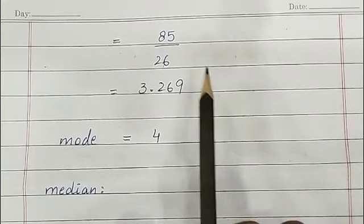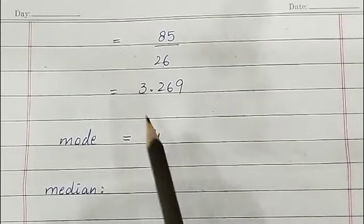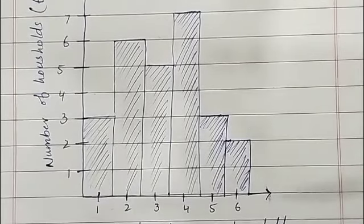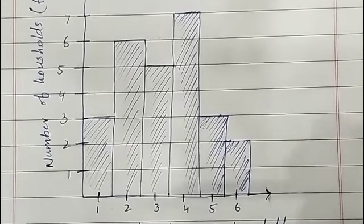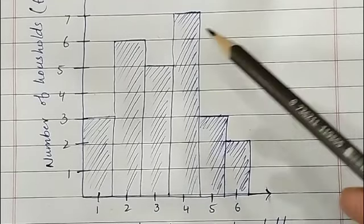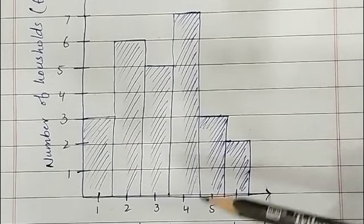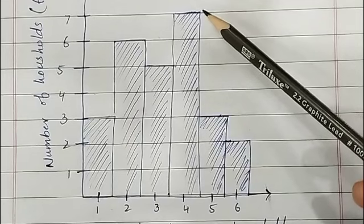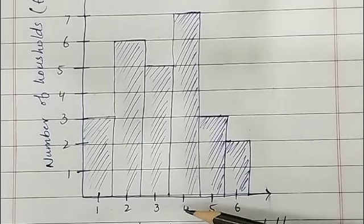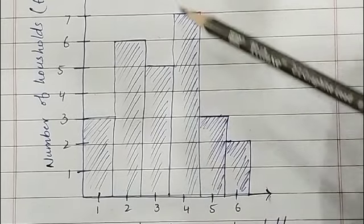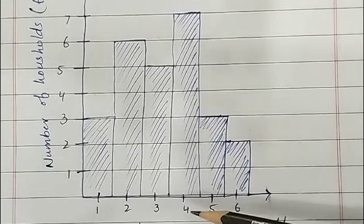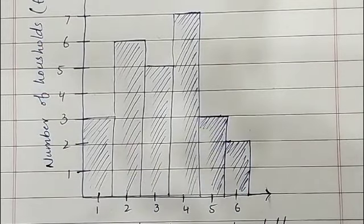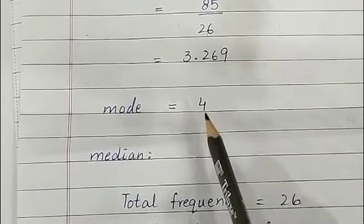Next is the mode. For the mode you have to find out the maximum frequency — the bar with the maximum frequency. The maximum frequency is 7, and the corresponding number is 4. So the mode is 4, because 4 comes more times than the rest of the numbers in this histogram. The mode equals 4.